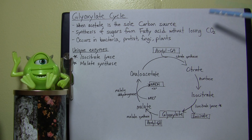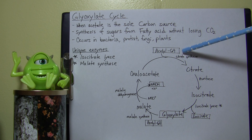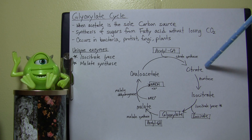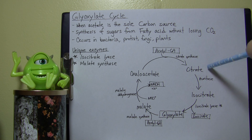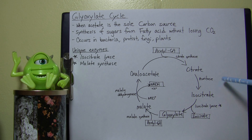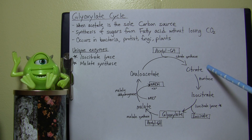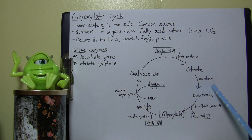In the beginning, oxaloacetate and acetyl-CoA together produce citrate using citrate synthase — this step is the same as in the standard cycle. Then citrate is converted into isocitrate using aconitase, with water being added and lost in the process.